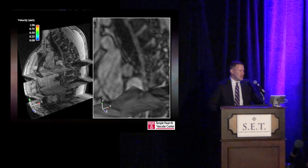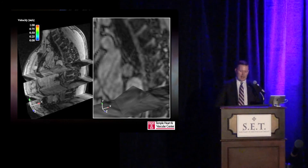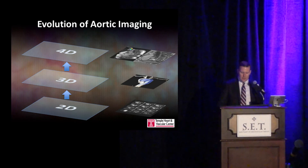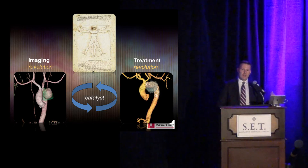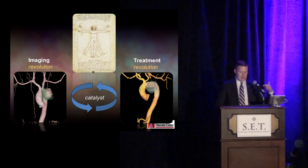Imaging is getting increasingly better. You can see here this 4D MRI that not only looks at anatomic variables within the aorta but also the intravascular flow dynamics to see flow from a unique perspective. This type of imaging is going to help us as we march into the ascending aorta. As imaging goes from 2D to 3D to 4D, it will catalyze the interventional and endovascular evolution.